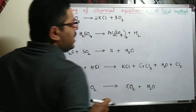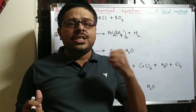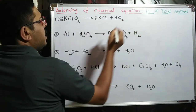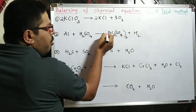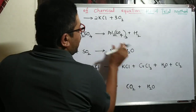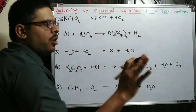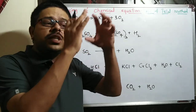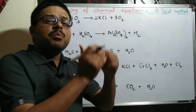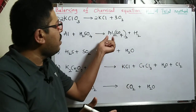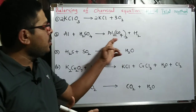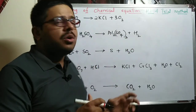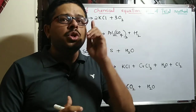You can change the coefficient — the number placed before the molecule — but you cannot touch the subscripts inside the formula at all. Because when you change the subscript, the molecular nature becomes different; that molecule may not even exist. For example, aluminium sulfate formula is Al2(SO4)3. If you add a 4 inside to balance sulfur, you have changed the whole molecule itself, and that is not allowed.